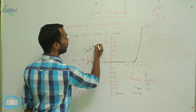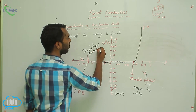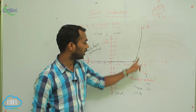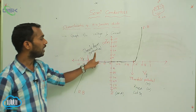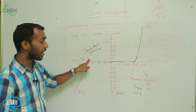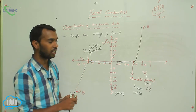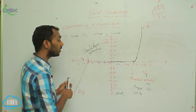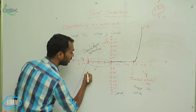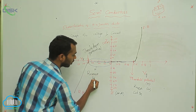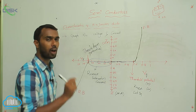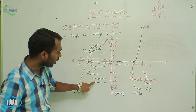The potential at which we get more current in forward bias is called the threshold potential. In reverse bias, the potential at which we get more current is called the breakdown potential. The small amount of current flowing in reverse bias before breakdown — that current has a name: it is called reverse saturation current.